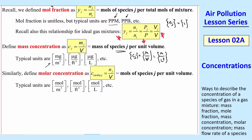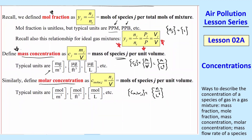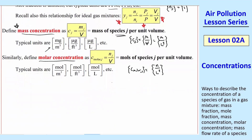We can similarly define a molar concentration, similar to mass concentration except it's number of moles per unit volume instead of mass per unit volume — so moles per meter cubed, moles per foot cubed, moles per liter, etc. The dimensions of C_molar_j are simply number of moles per volume. Sometimes we use molar concentration, but a lot of the time we need mass concentration, so you have to be able to convert between all these different types.